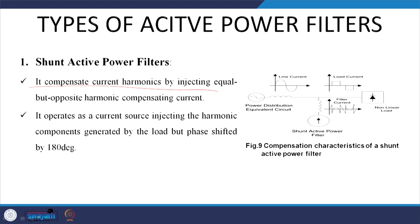You can think of the harmonic generated by the load as being 180 degrees out of phase with the injecting current. Thus your load current is distorted, but ultimately you inject the compensating current, so the source will see that this entity is sinusoidal — as if a resistive load is connected to the voltage source.